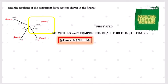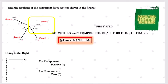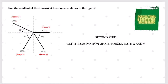Finally, Force 4 is the 200 pounds force, and its direction lies directly along the x-axis. We only have a value for the x component; the y component is automatically zero. The x component is positive 200 pounds because it goes in the right direction — it would be negative if going left. The y component is zero.